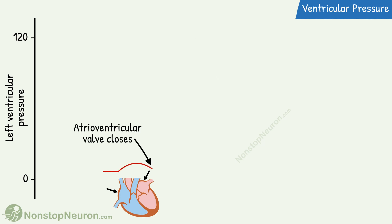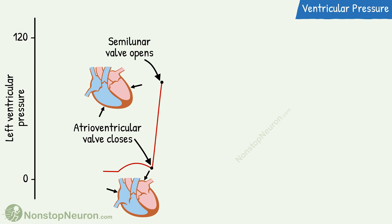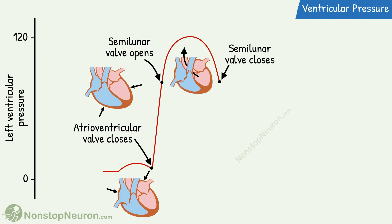At this point, the atrioventricular valves close. Then an isovolumetric contraction of the ventricles produces a sharp rise in pressure. This point marks the opening of the semilunar valves. Now during rapid ejection, the pressure continues to rise and reaches the maximum. And during slow ejection, the pressure starts to fall. Then the semilunar valves close and during isovolumetric relaxation, the pressure falls sharply.